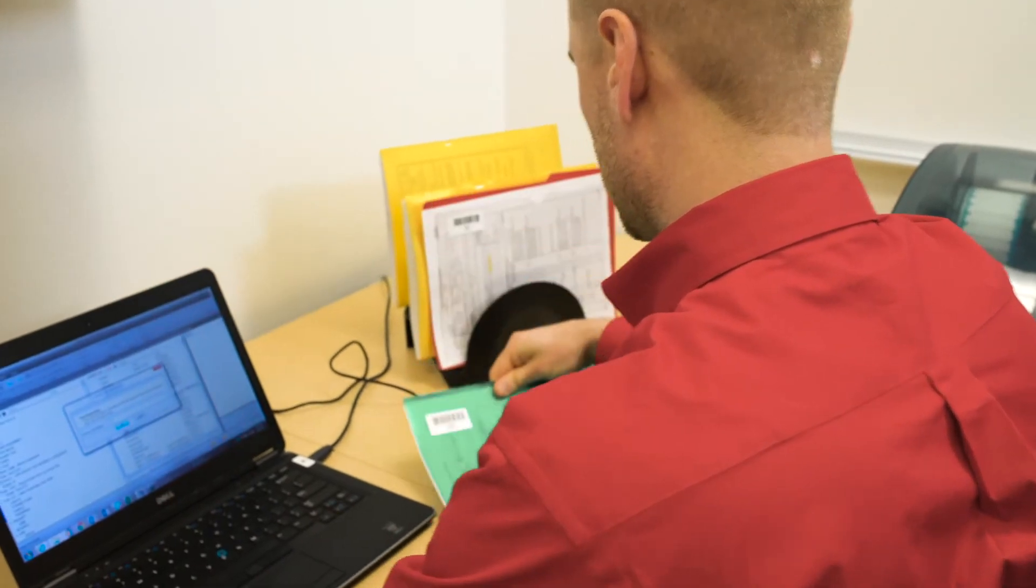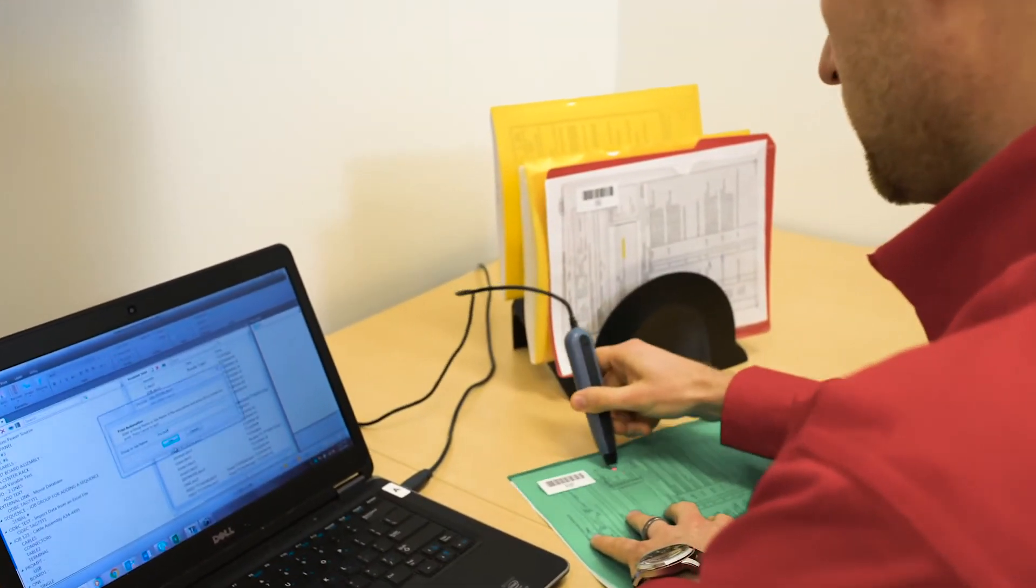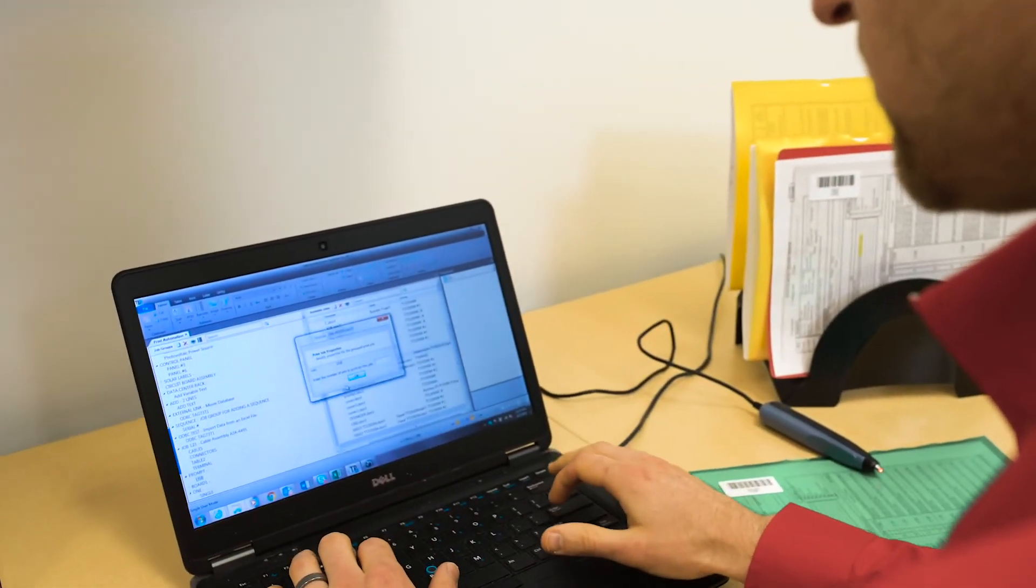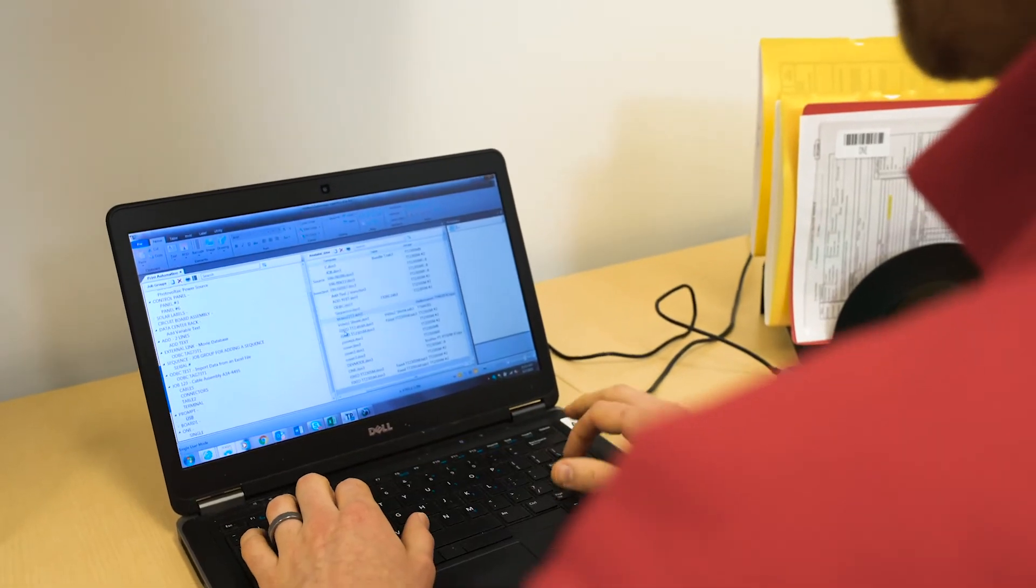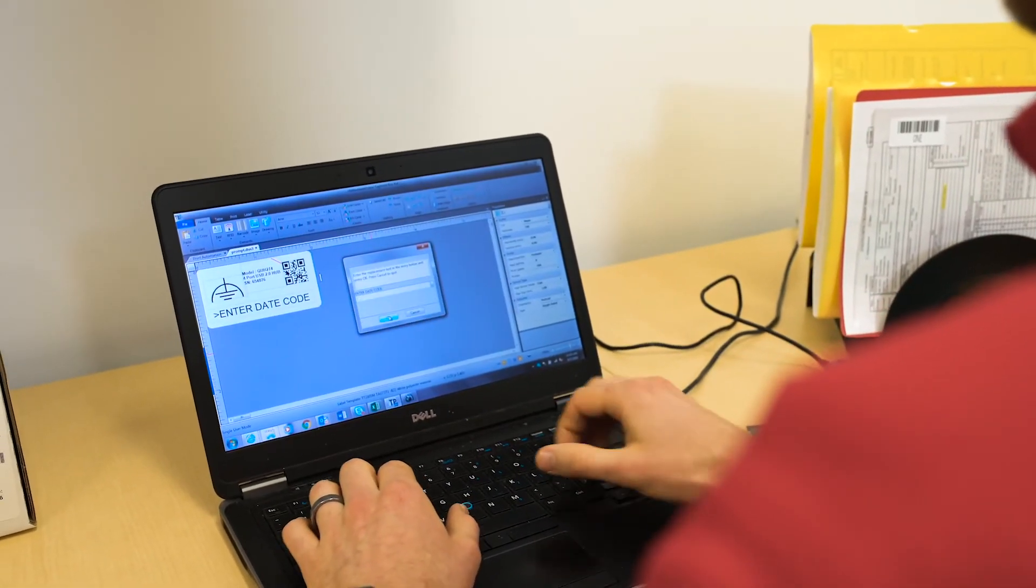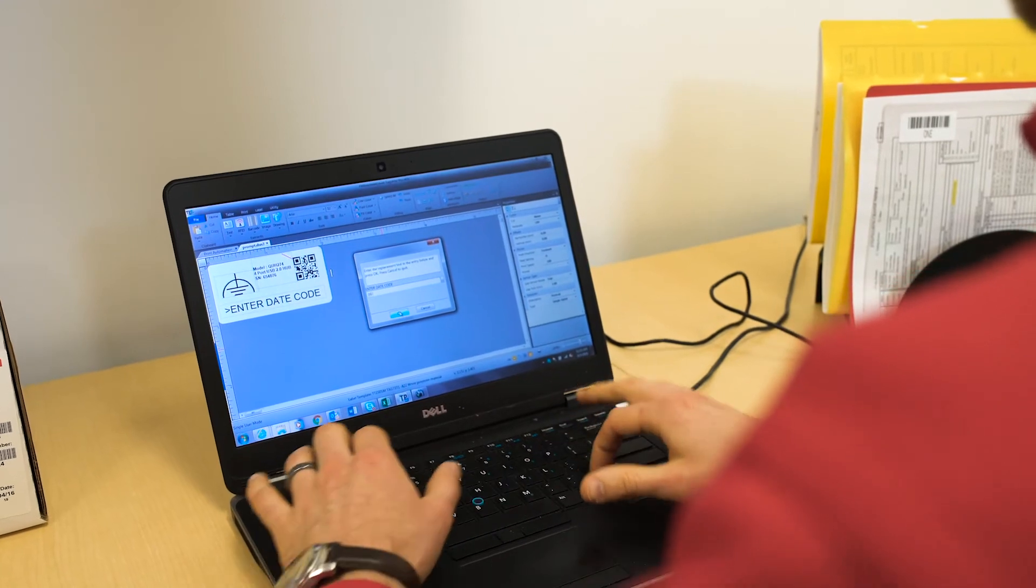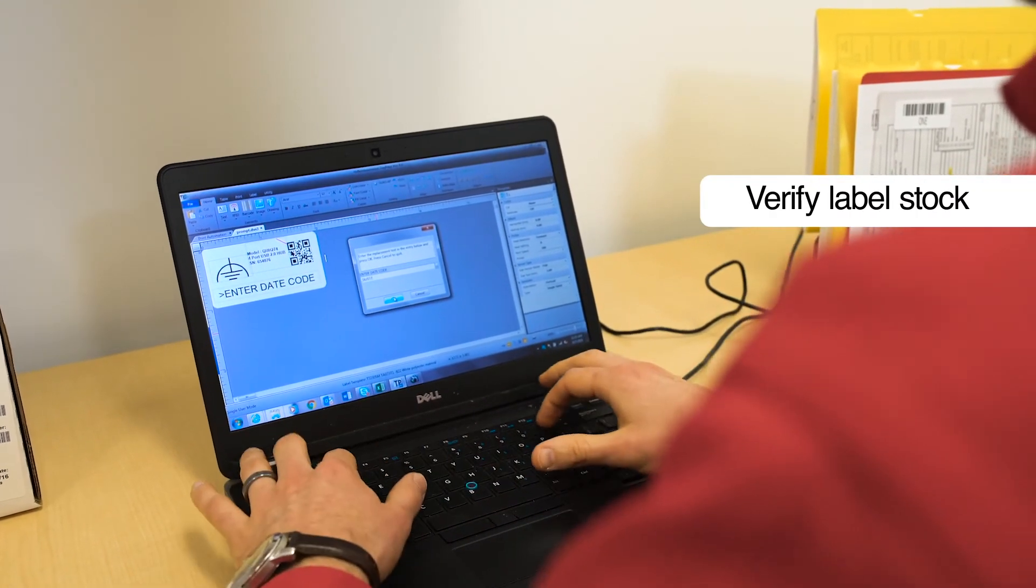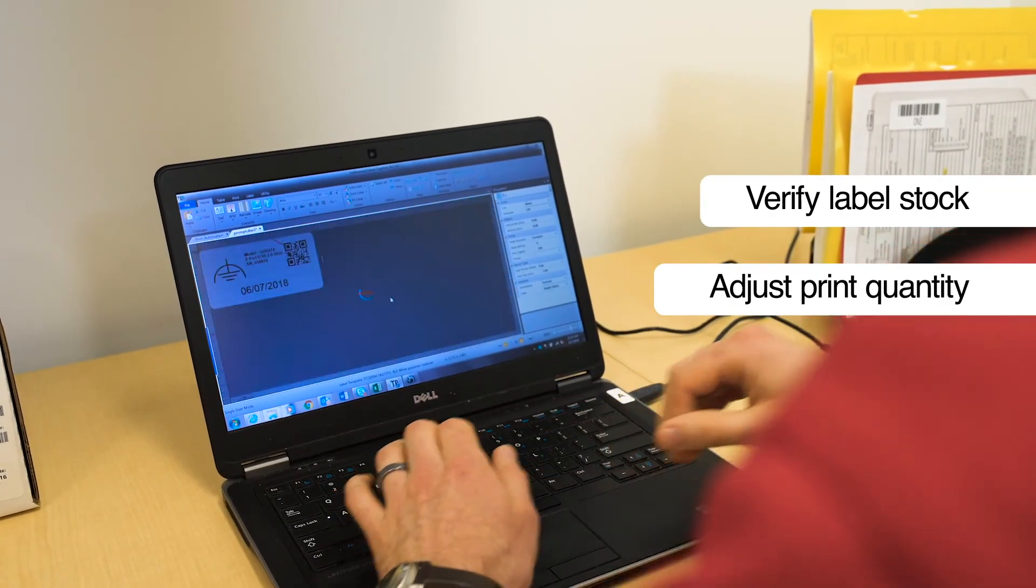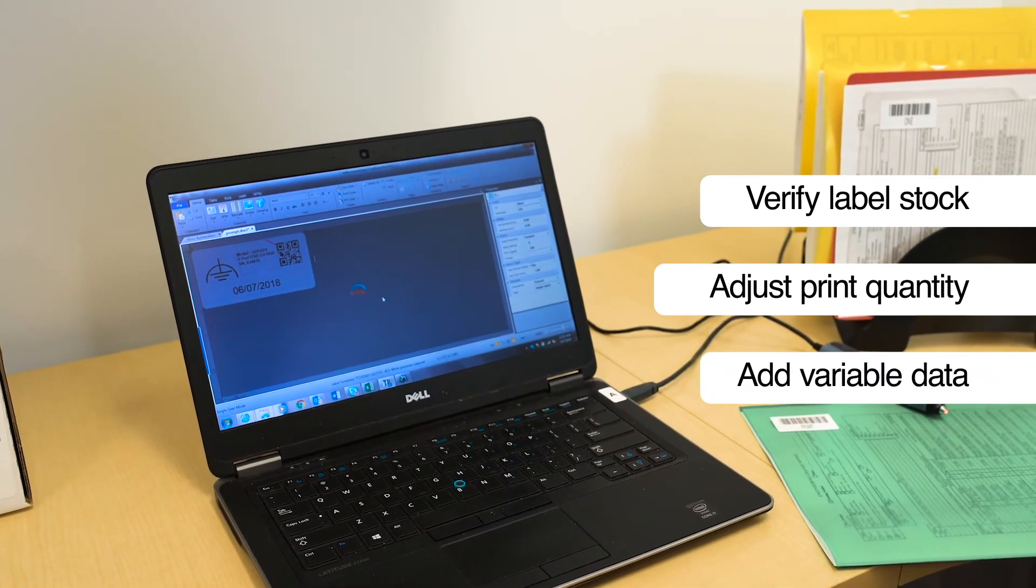Love the idea of hands-off label printing, but still need to customize certain details on the fly? No problem. Just add one or more smart prompts, which pop up before printing, to remind the operator to verify label stock is loaded, ask for a quantity, enter a date code, you get the idea.